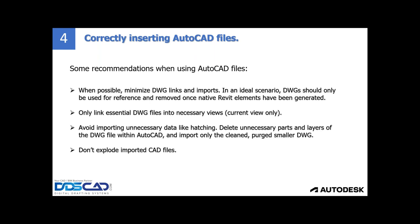As a second recommendation: only link the essential DWG files. If you necessarily need to use AutoCAD files, use just the essentials and avoid importing unnecessary data like hatches, dimensions, and text. There's a lot of data that an AutoCAD file has. When we delete this in the AutoCAD file prior to importing or linking it into Revit, that will actually perform better in Revit and help you organize the files better. And by all means, last but not least: never explode imported AutoCAD files.